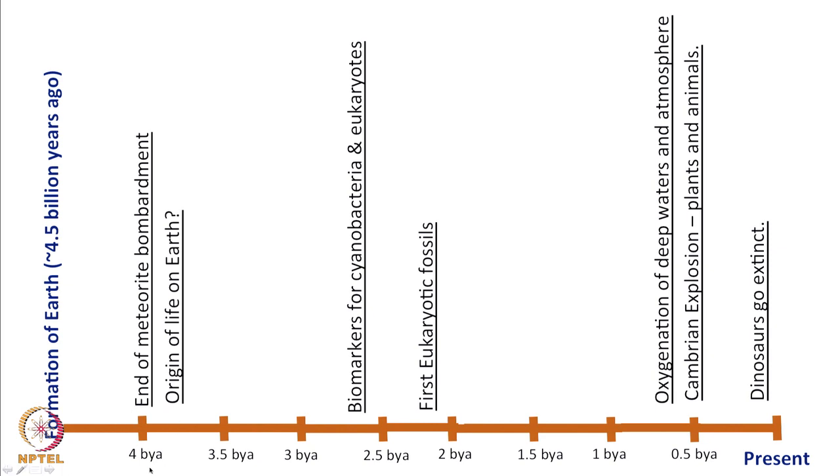Around 4 billion years ago we get the end of meteorite bombardment and Earth more or less stabilized. The first indirect living evidence of life on Earth comes from samples collected in Greenland, giving us a clue that life may have originated on Earth as far back as about 3.85 billion years ago. Archaea and bacteria are thought to be the first life forms that originated on Earth, and for a very long time nothing changed and it was only these species that existed.